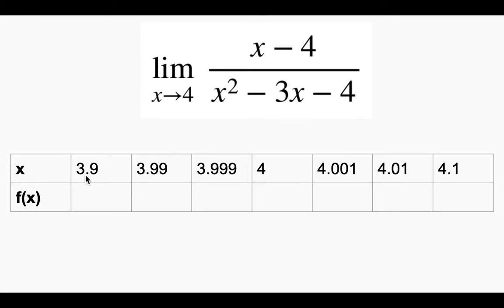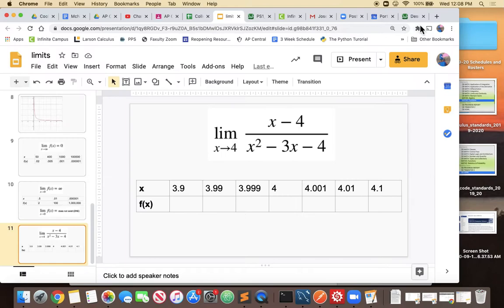So take 3.9 and plug it in here: 3.9 minus 4 over 3.9 squared minus 3 times 3.9 minus 4. This is going to be a lot in the calculator, but there's a much quicker way to do it, which is using Desmos, the magic of Desmos. Let's go over there and take a look at that.